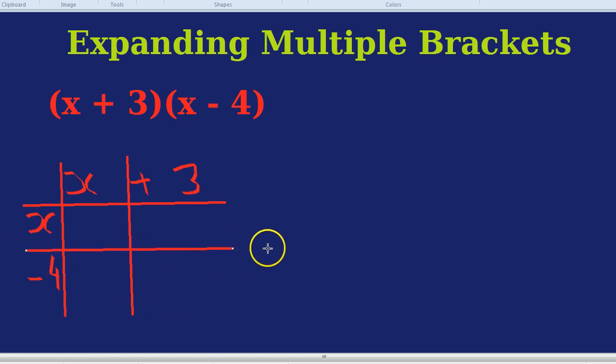What this does is it reminds you of each of the multiplications that you're going to have to do. Everything in the first bracket has to be multiplied by everything in the second bracket. Just like when you're expanding single brackets, everything on the outside has to be multiplied by everything on the inside. But here, everything in the first bracket is going to be multiplied by every term in the second bracket. And the box method just reminds you to do each step and don't miss any out.